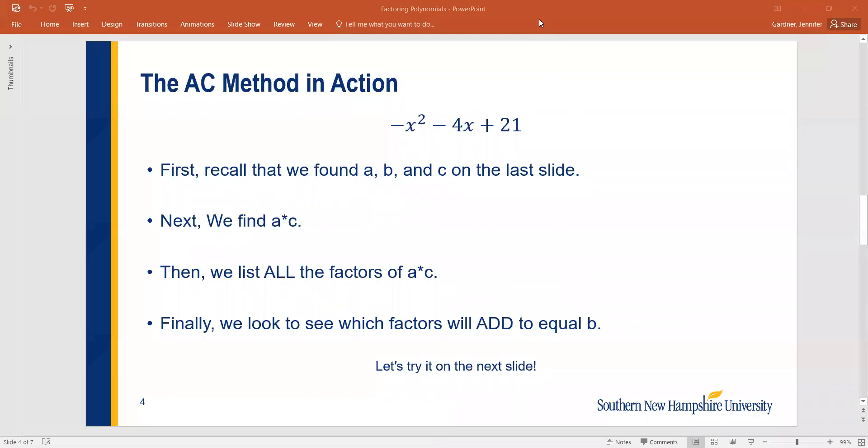So now we're going to use the AC method in action. So the reason it's called the AC method is it's going to use A and C from the ABC coefficients. So remember that we knew that A was negative 1, B was negative 4, and C was 21. We know that. We did that on the last page. So we've recalled that. We've done the first step. Our next step was to find A times C. The AC method involves multiplying A times C. So we will find that A times C is going to be negative 1 times 21, which should give us negative 21. That's the first step of the AC method to figure out what A times C is. So we figured that out.